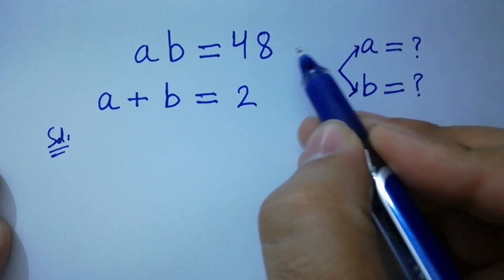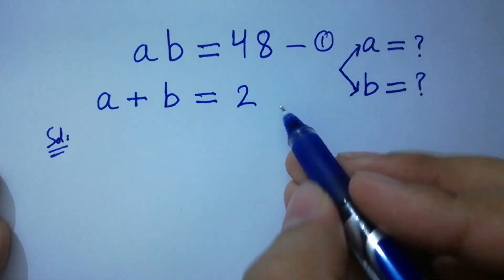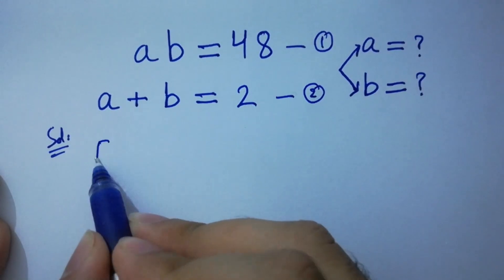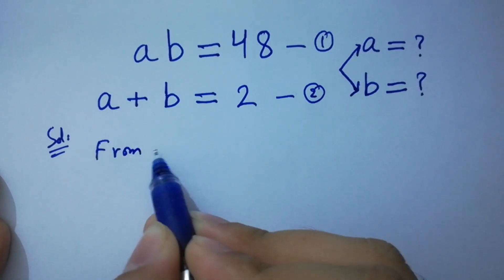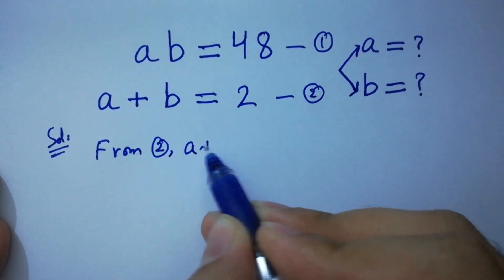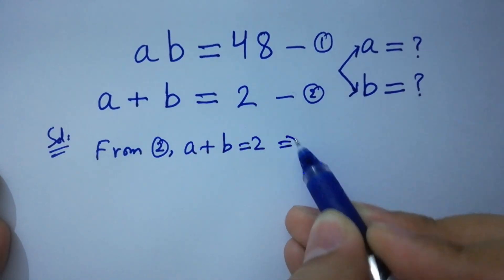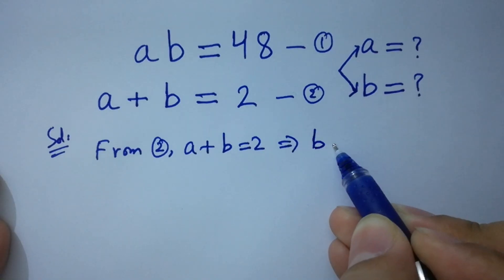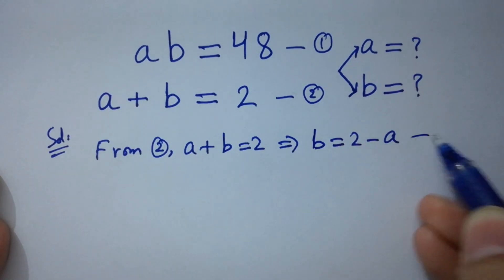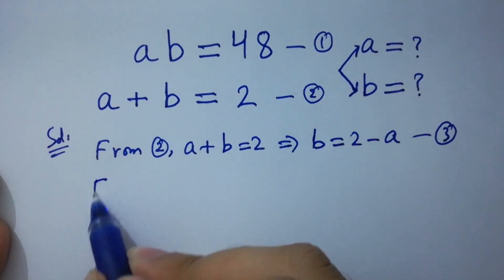Let ab equal to 48 be the first equation and a plus b equal to 2 be the second equation. From the second equation, a plus b equals 2, so b equals 2 minus a. Let this be the third equation.